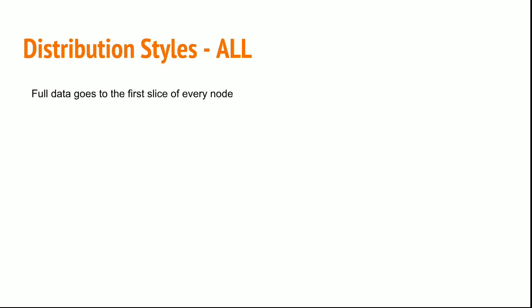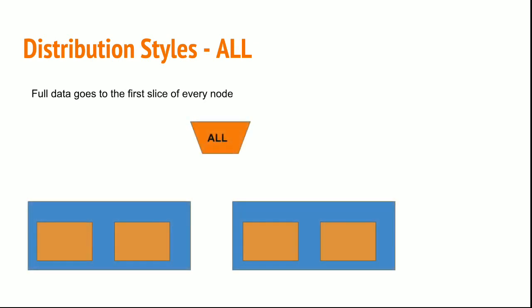Now distribution style ALL. Full data goes to the first slice of every node. When I select distribution style ALL, the data in a table will be copied to the first slice of each node. If I have customer data, then the customer table will be copied to the first slice of node 1 and the same customer table will be copied to the first slice of second node also.